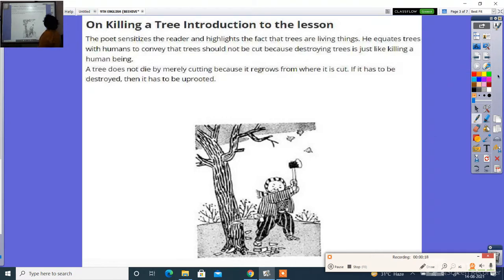The poet sensitizes the reader and highlights the fact that trees are living things. He equates trees with humans to convey that trees should not be cut because destroying trees is just like killing a human being. A tree does not die by merely cutting because it regrows from where it is cut. If it has to be destroyed, then it has to be uprooted. Braksh ko kabhi bhi nuksan nahi pahuchana chahiye, katna nahi chahiye, kyonki braksh hamein jeevan dethe hai. Hamari jo oxygen hai, wo hamein pradhan karte hai, isi liye hamesha paryavaran ko bachana chahiye.